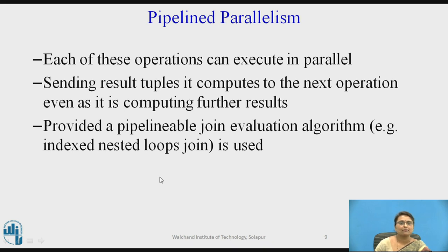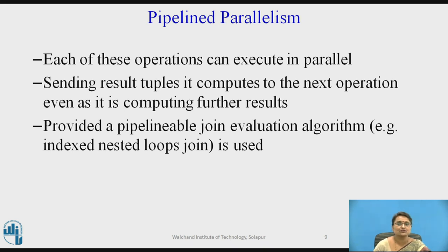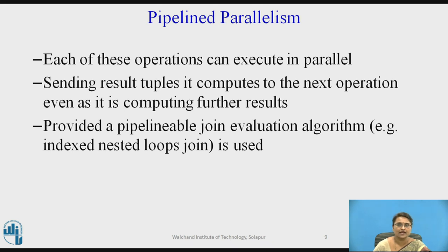In pipeline parallelism, each of the operations executes in parallel — there may be some time difference, since in our example processor P1 always starts first, then P2, then P3, but everyone is executing in parallel. The result of one operation is provided to the next for further result calculation. Pipeline parallelism is applicable only to pipelineable join evaluation algorithms, for example index nested loop join.